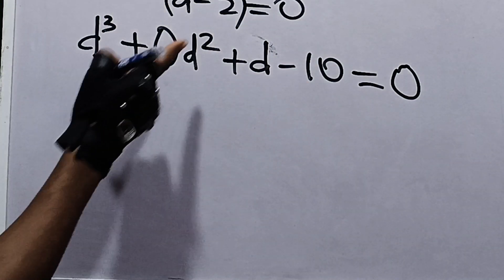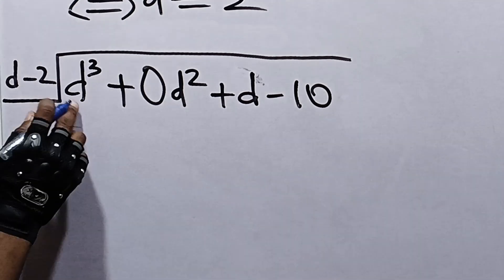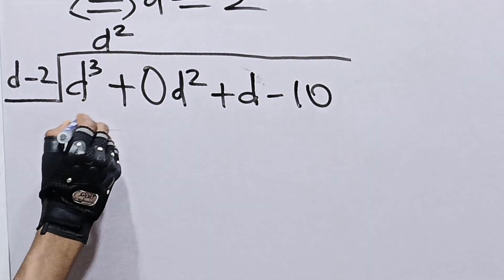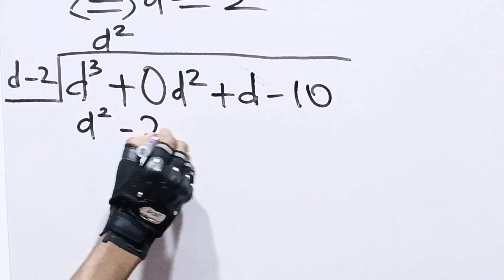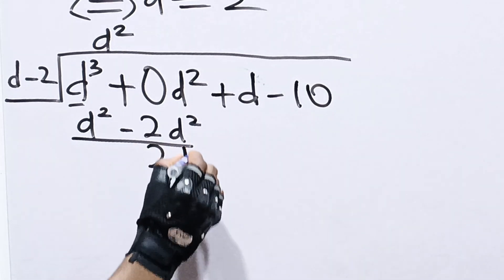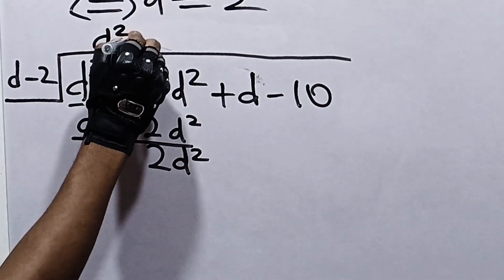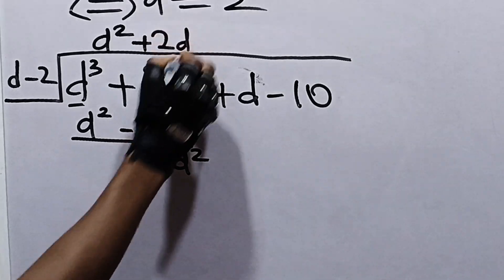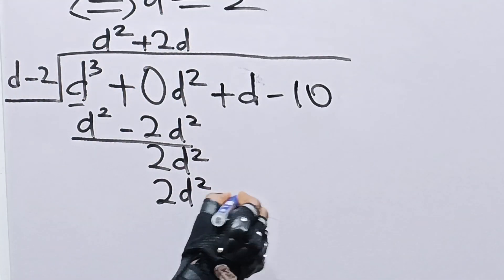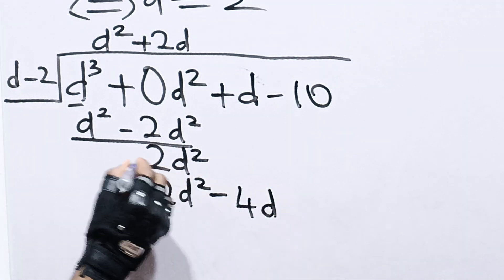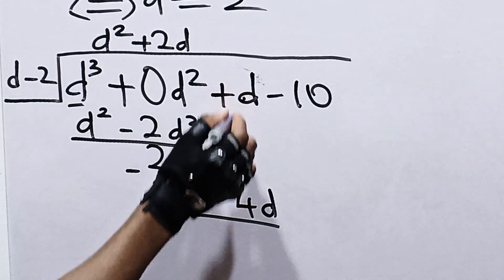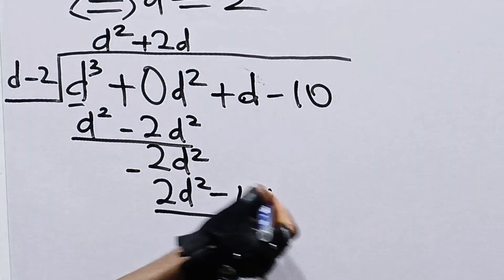Dividing by d minus 2: d cubed divided by d is d squared. Then d squared times d is d cubed, and d squared times negative 2 is negative 2d squared. Subtracting gives us positive 2d squared. Then 2d squared divided by d is 2d, and 2d times d is 2d squared, and 2d times negative 2 is negative 4d. We subtract.